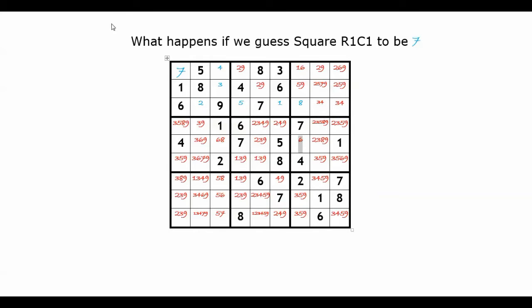Here I see there is a finalized 6 in this square. We remove 6 from its row, 6 from its column, and 6 from its box.